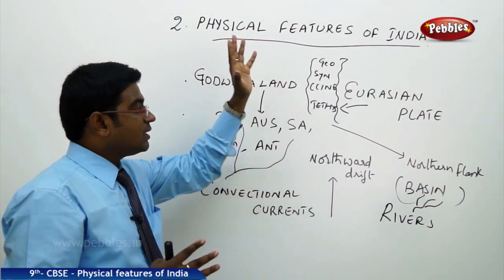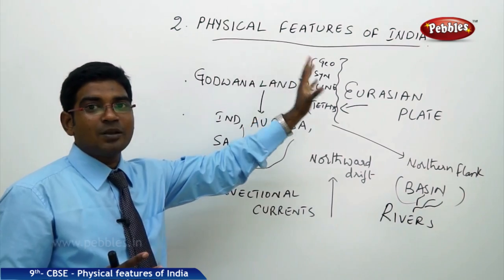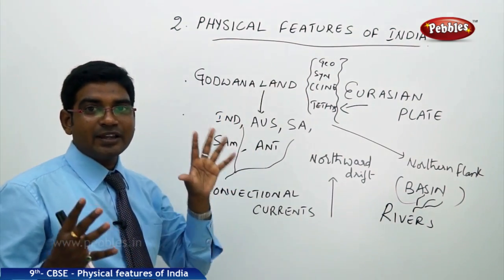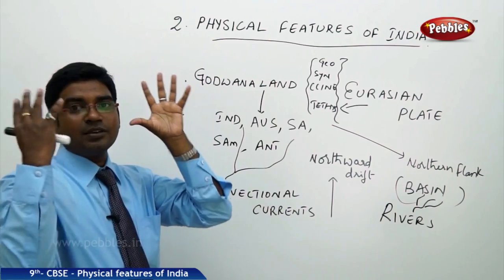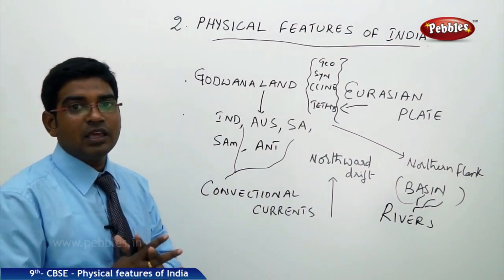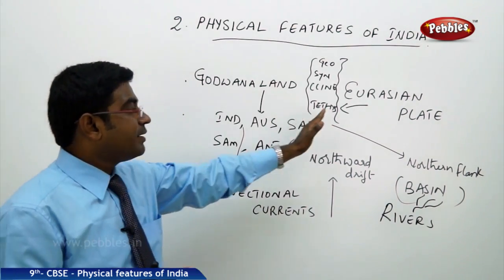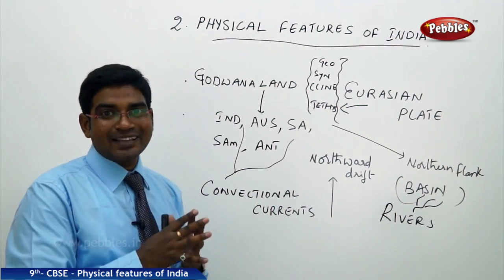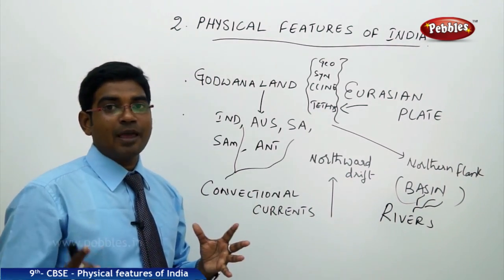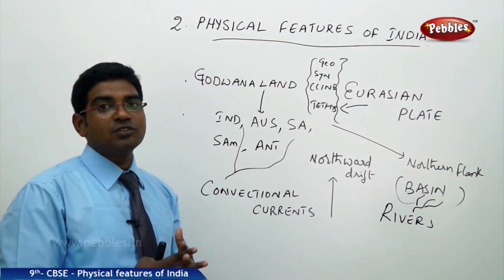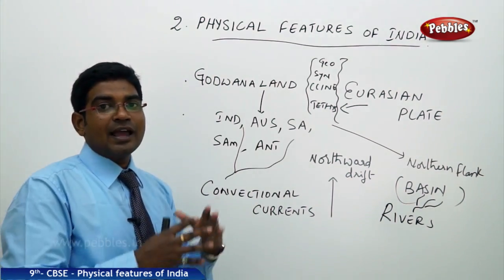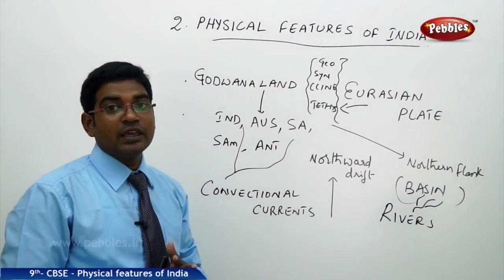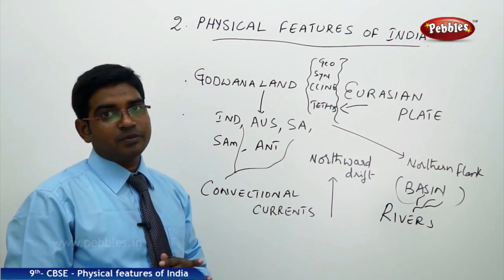As a result, the sedimentary rocks present inside the Tethys sea started to buckle up and rise as mountainous formations. The water present in the Tethys sea was displaced through the geosyncline process, which took many millions of years and finally resulted in the formation of the Himalayas.